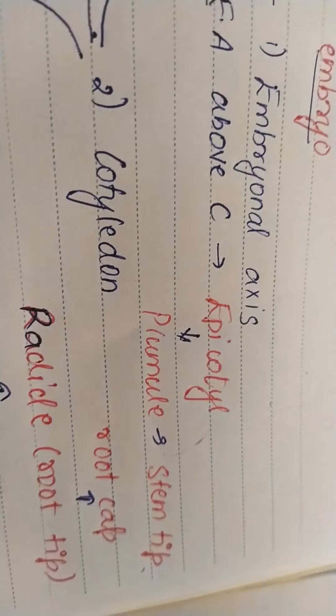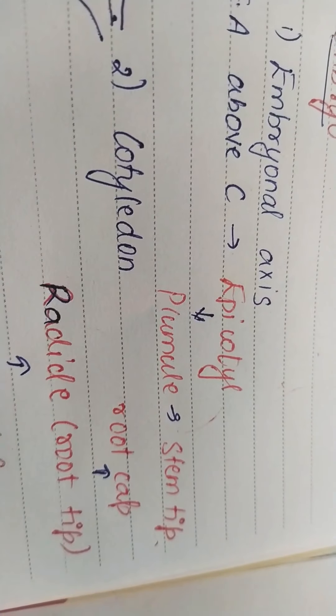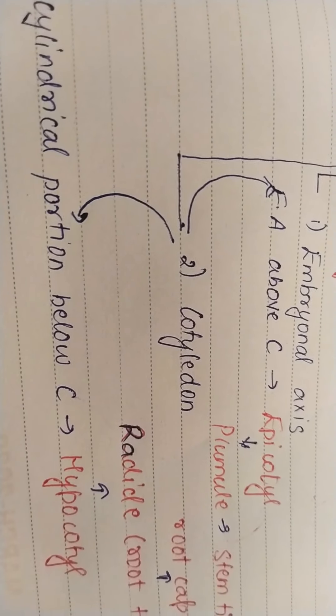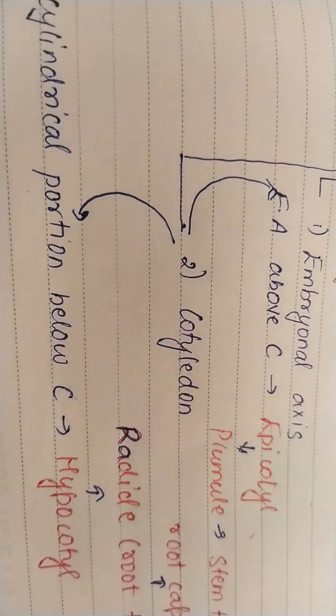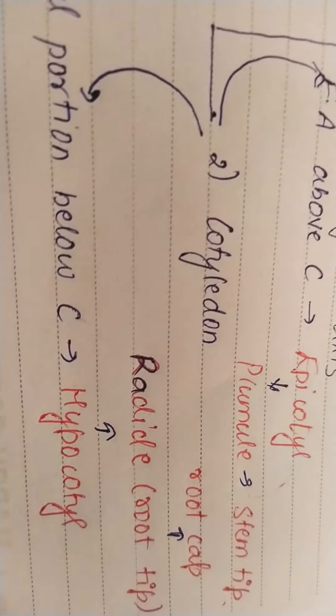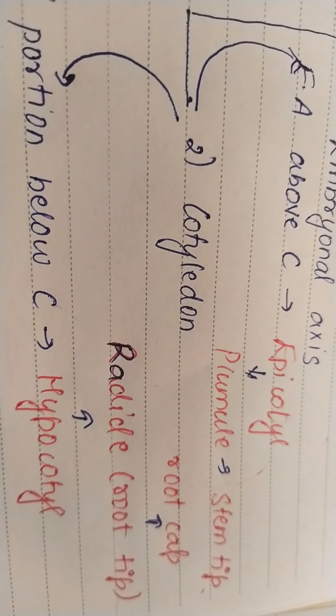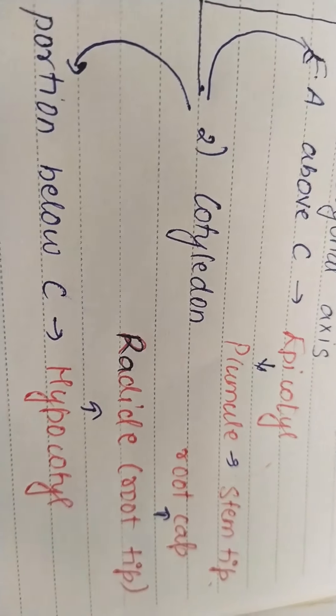Similarly, the embryonal axis below cotyledon is a cylindrical portion which is known as hypocotyl, which will further form or terminate into radicle and root tip.